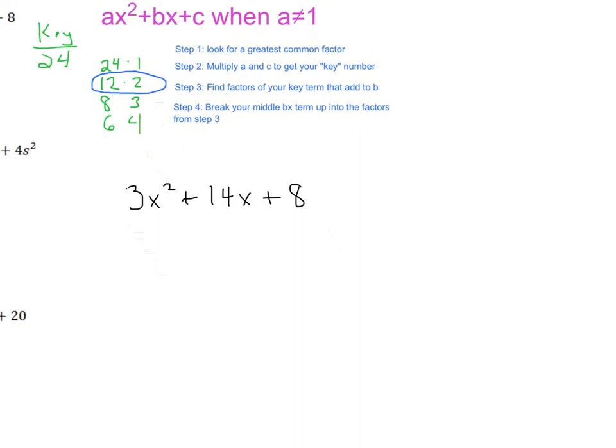So it says to break up our middle term into the factors from step 3. What were the factors in step 3, 12 and 2? So we are going to break this middle term up and this is going to become 3x squared stays the same and we break this 14x up into a positive 12x and a positive 2x because those were the factors that we found up here. And then we still have the plus 8 at the end.